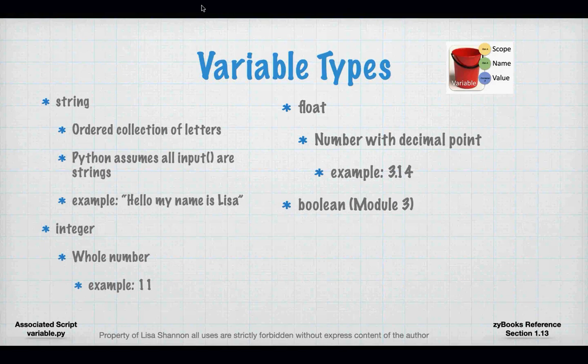So there are four types of variables: there's a string, an integer, a float, and a boolean. Booleans we're not going to deal with until week three. But for module one and module two you need to know what a string is, what an integer is, and what a float is. A string is just an ordered collection of characters — a space is part of an ordered collection, a quote can be part of an ordered collection. An integer is a whole number — it's 11, it's 42. And a float is a number with a decimal point, just like if you were doing math.